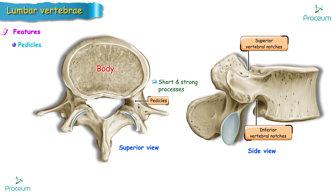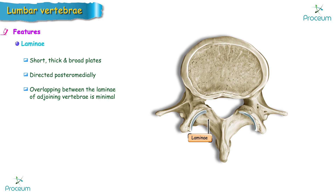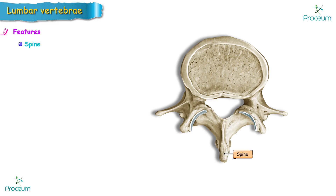The laminae are short, thick, and broad plates, directed posteromedially. The overlapping between the laminae of adjoining vertebrae is minimal. The spine is quadrilateral in shape and projects backwards.